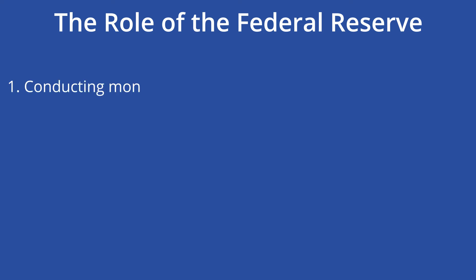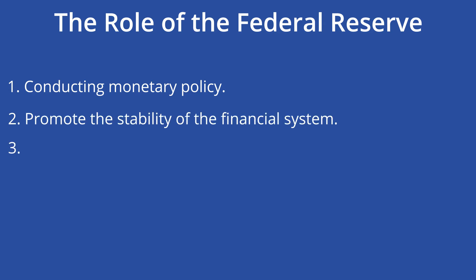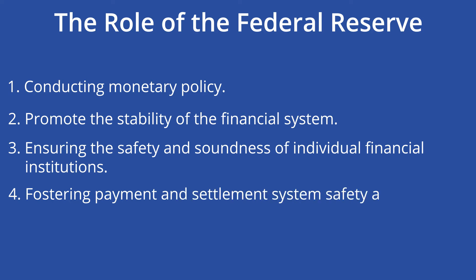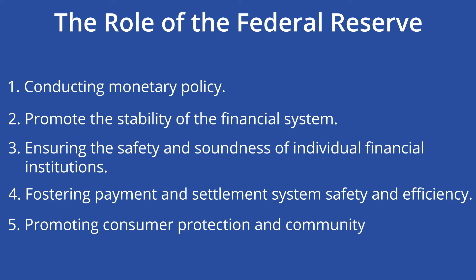The Federal Reserve performs five key functions to ensure the effective operation of the United States economy: 1. Conducting monetary policy by adding or subtracting the amount of money in the economy. 2. Promoting the stability of the financial system. 3. Ensuring the safety and soundness of individual financial institutions by keeping financial institutions honest. 4. Fostering payment and settlement system safety and efficiency. And 5. Promoting consumer protection and community development by making sure the common American citizen has protections against fraud and predatory institutions.